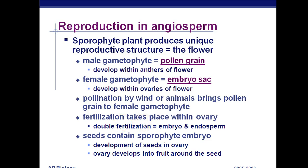Don't get the polar nuclei confused with polar bodies. Polar bodies are the three cells produced by females after meiosis during gamete production that don't become an egg — one egg, three polar bodies. That's not the same thing as the polar nuclei in plants. The seed contains the sporophyte embryo — the diploid embryo that came from the zygote.